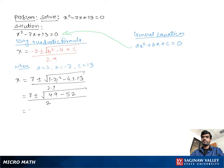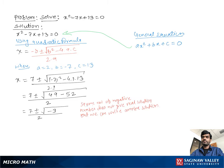Then we can write 7 plus or minus the square root of negative 3, over 2. We can also write this as 7 plus or minus the square root of 3 times the square root of negative 1, over 2.